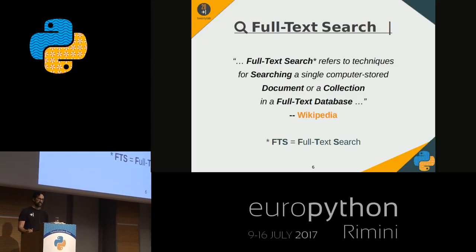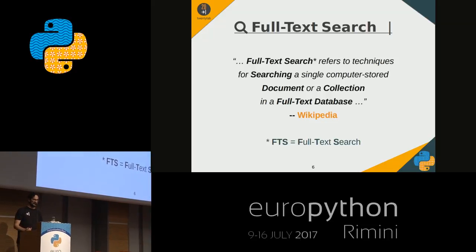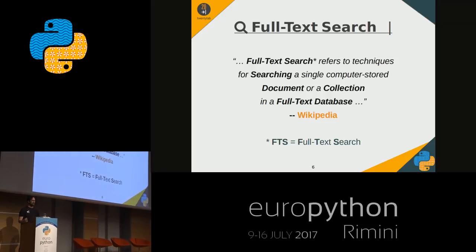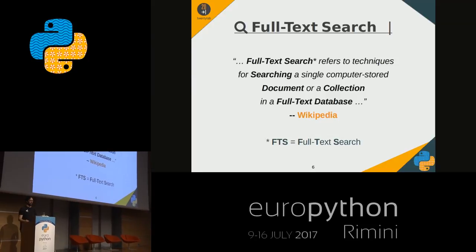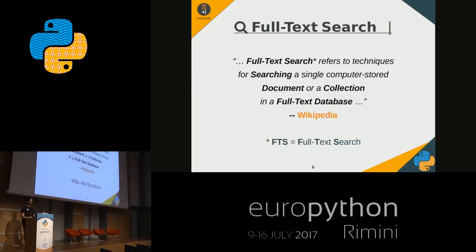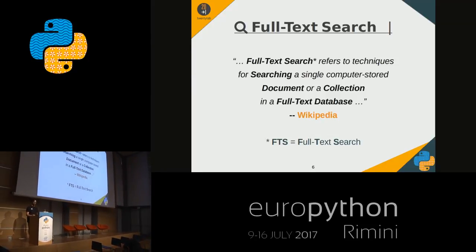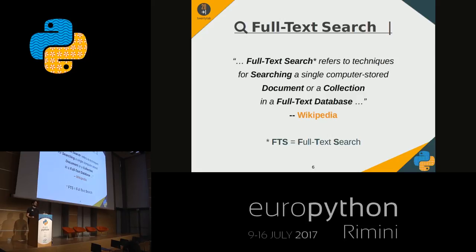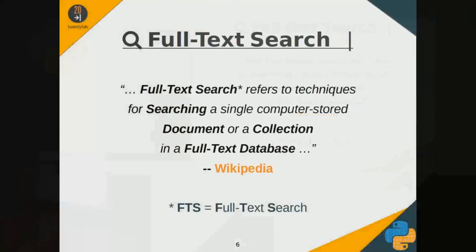Full-text search derives from the need to do document search. For example, to find all documents that contain specific words and their variations. If a document contains 'house' or 'houses', it will be the same for the search. Some examples of everyday use of full-text search are search engines, document search, email searching, and so on.